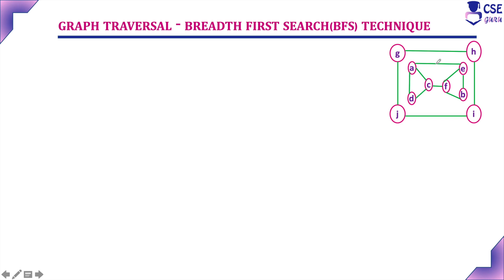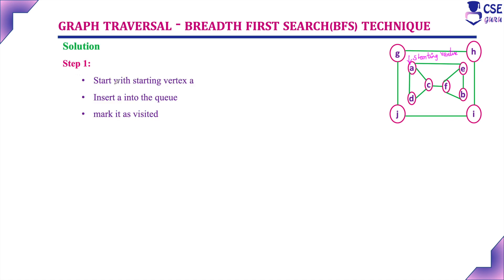In this given graph, initially we need to consider one vertex as the starting vertex. Here I am considering vertex A as the starting vertex. There are two disjoint graphs, so first we will find the breadth first search traversal for this graph. We will consider the starting vertex as A. Step 1: start with starting vertex A and insert A into the queue. The current vertex here we are considering is A.